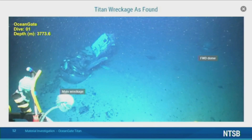This image shows the Titan wreckage as it was discovered on the ocean floor. The aft dome, aft segment, top rail, side rails, and the aft portion of the composite hull were located together. The forward dome shown to the right, the forward segment, and the tail section were each found by themselves.